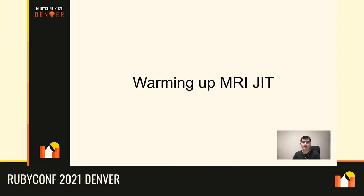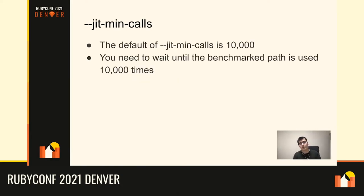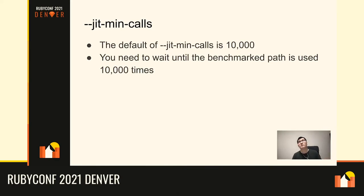The next section is about warming up MJIT. First, the --jit-min-calls option sets the minimum number of calls needed before MJIT compiles a method. The default since Ruby 2.7 is 10,000 calls — so the same method must be called 10,000 times before the JIT compiler will compile it. If your benchmark doesn't run a method 10,000 times, it won't be compiled and the benchmark is not meaningful for MJIT evaluation.